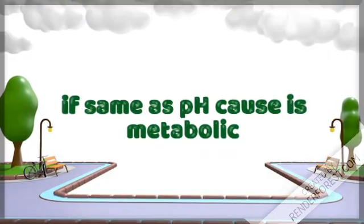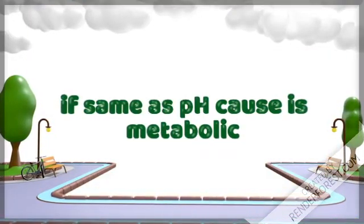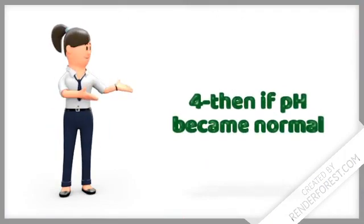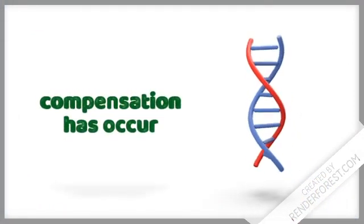For example, if the pH increases, that is alkalosis, and the bicarbonate ion also increases. Its normal value is 22 to 27. If it is increasing above the normal value, then you can say the cause is metabolic.